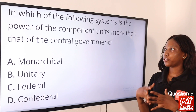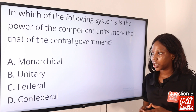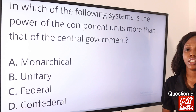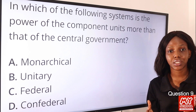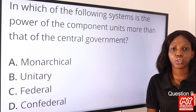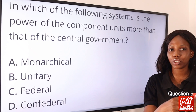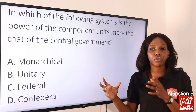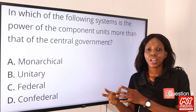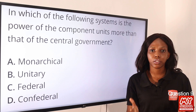Question 9: In which of the following systems is the power of the component unit more than that of the central government? Option A, monarchical; option B, unitary; option C, federal; option D, confederal. The answer is confederal. A confederal system is the association of countries coming together for a particular purpose. Each of these countries are component units and they are stronger than the association itself because they can choose to withdraw whenever they like. They are self-governing, which is why they are stronger as component units than the central government. So option D is the answer.